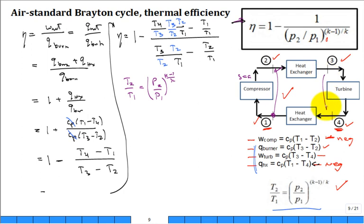How about, can I use that equation for the expansion through the turbine? It's also isentropic, ideal gas, constant specific heat. Could I say that T4 divided by T3 is equal to P4 over P3 to the K minus 1 over K?